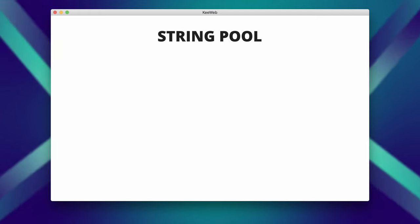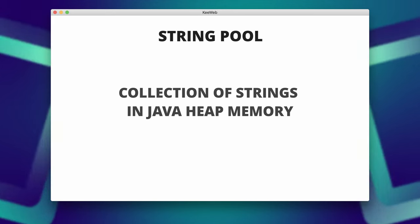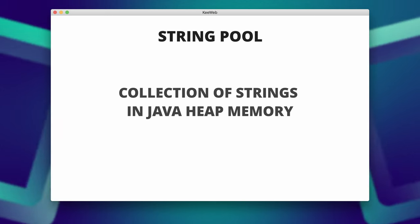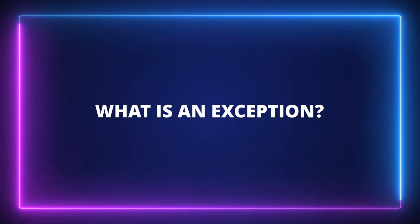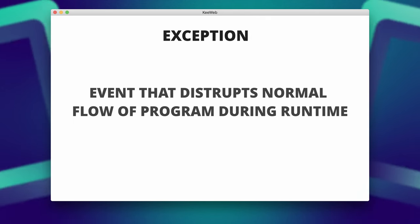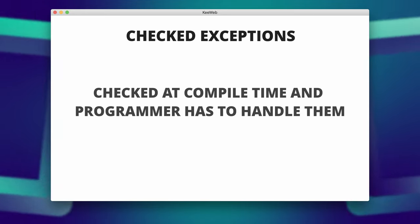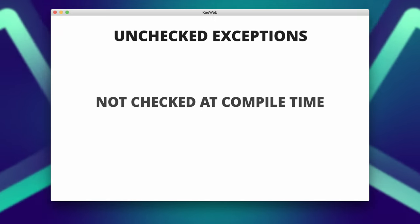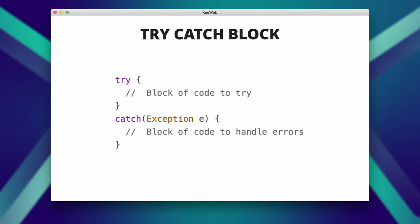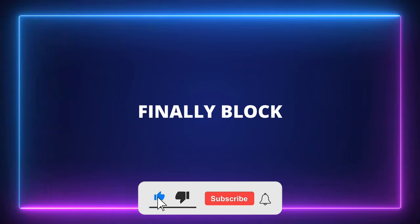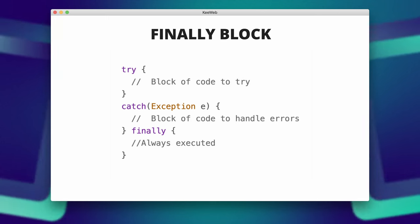Explain the Java string pool. A collection of strings in Java's heap memory is referred to as the Java string pool. In case you try to create a new string object, JVM first checks for the presence of the object in the pool. If available, the same object reference is shared with the variable; else a new object is created. What is an exception in Java? An exception is an event that disrupts the normal flow of a program during runtime. Checked exceptions are checked at compile time and the programmer is forced to handle them. Unchecked exceptions are not checked at compile time. Code within the try block is monitored for exceptions; if one occurs, it is caught in the catch block, allowing for graceful handling. The finally block contains code that will be executed whether an exception occurs or not, making it suitable for cleanup operations.